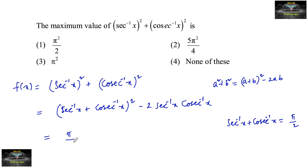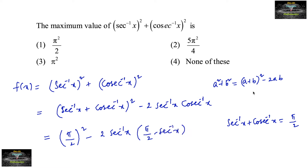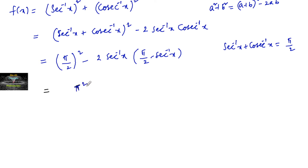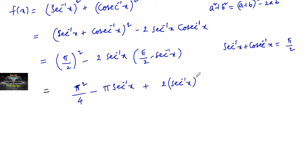Substituting, we get (π/2)² - 2·sec⁻¹x·csc⁻¹x. We can write csc⁻¹x as (π/2 - sec⁻¹x). This gives π²/4 minus 2·sec⁻¹x·(π/2 - sec⁻¹x), which expands to π²/4 minus π·sec⁻¹x plus 2·(sec⁻¹x)².